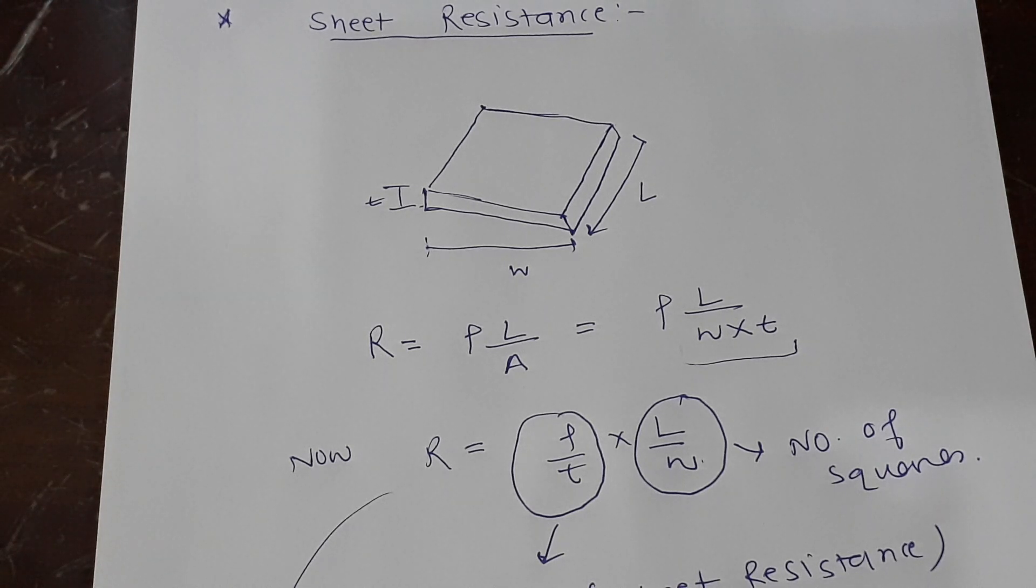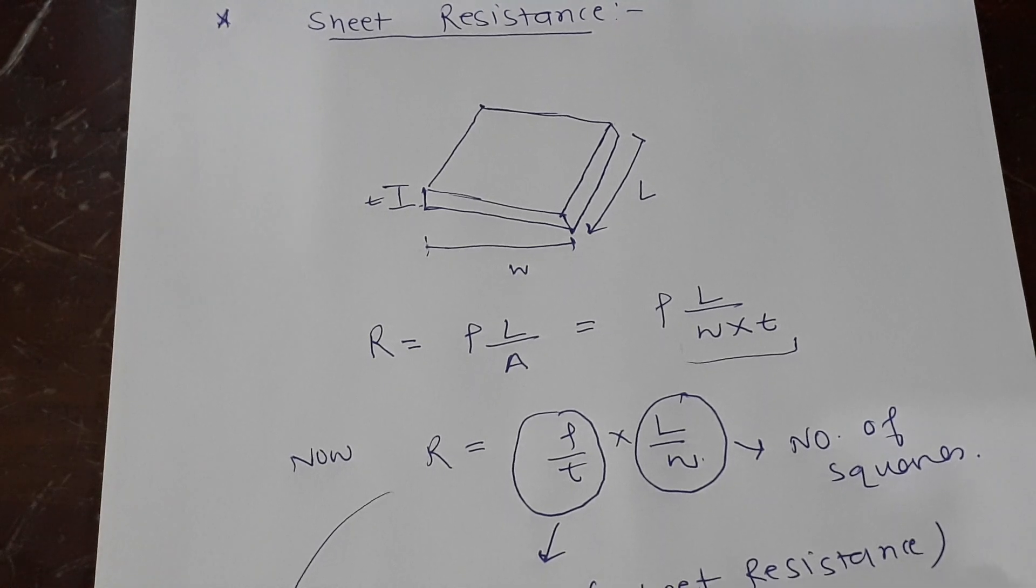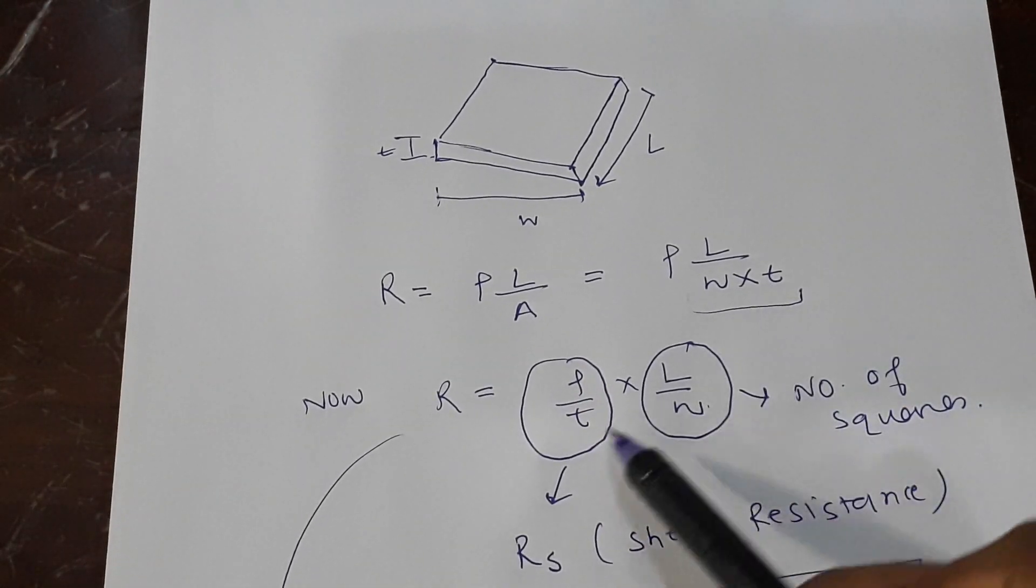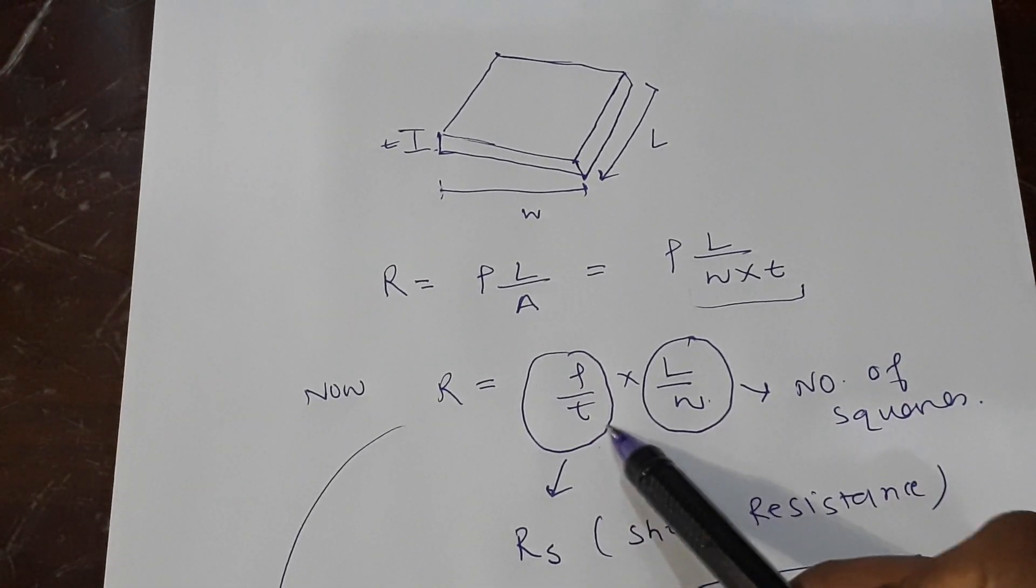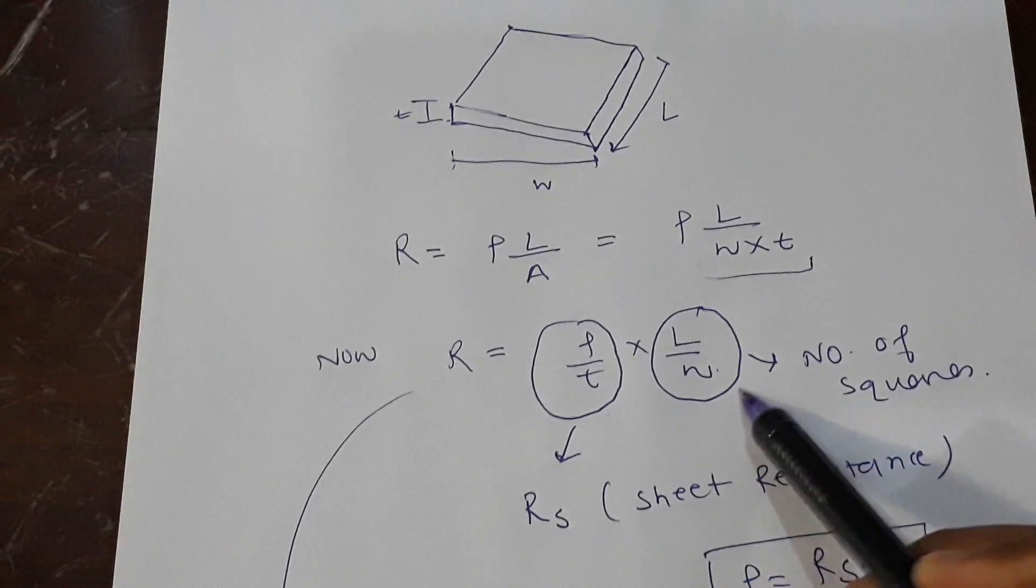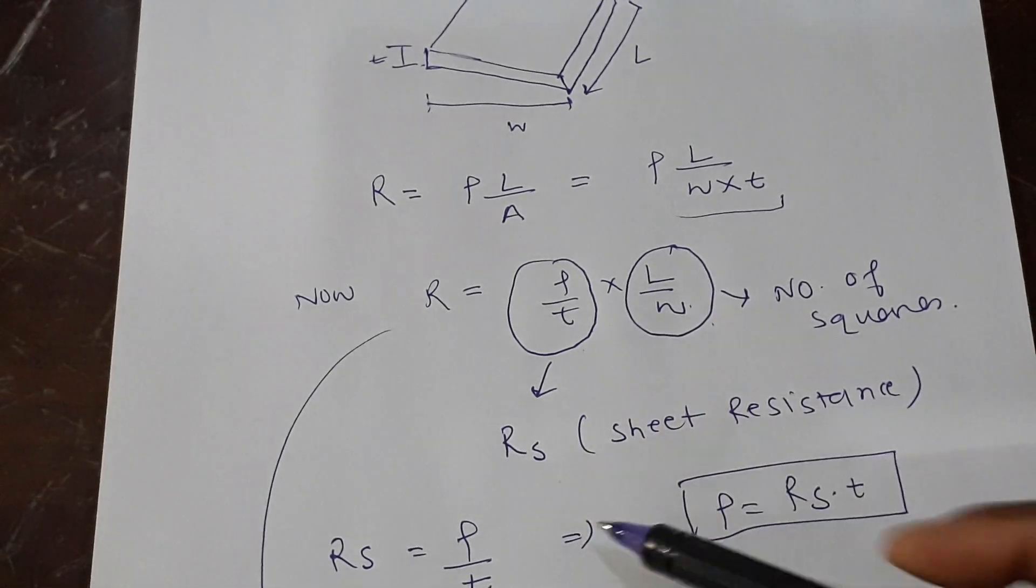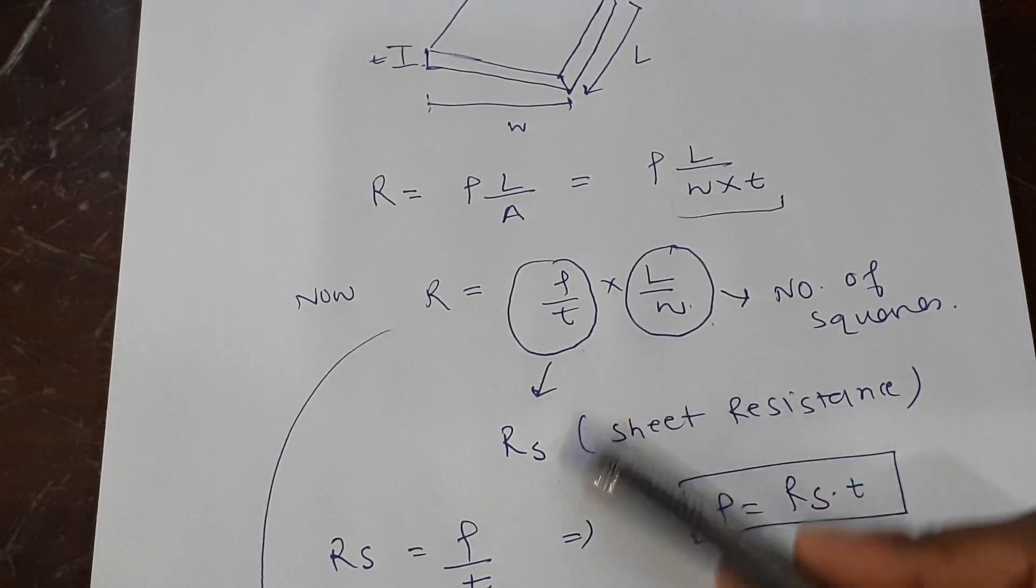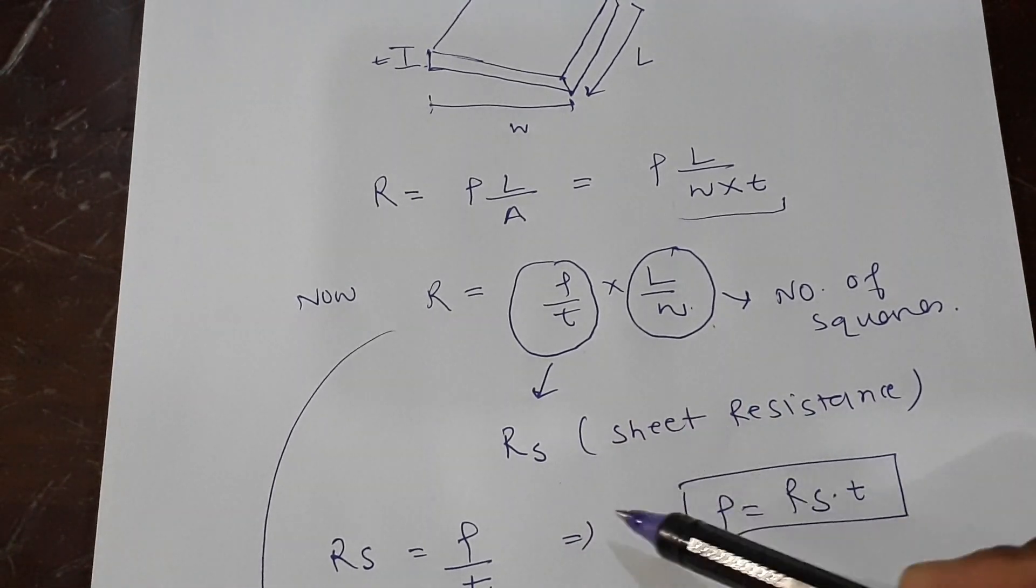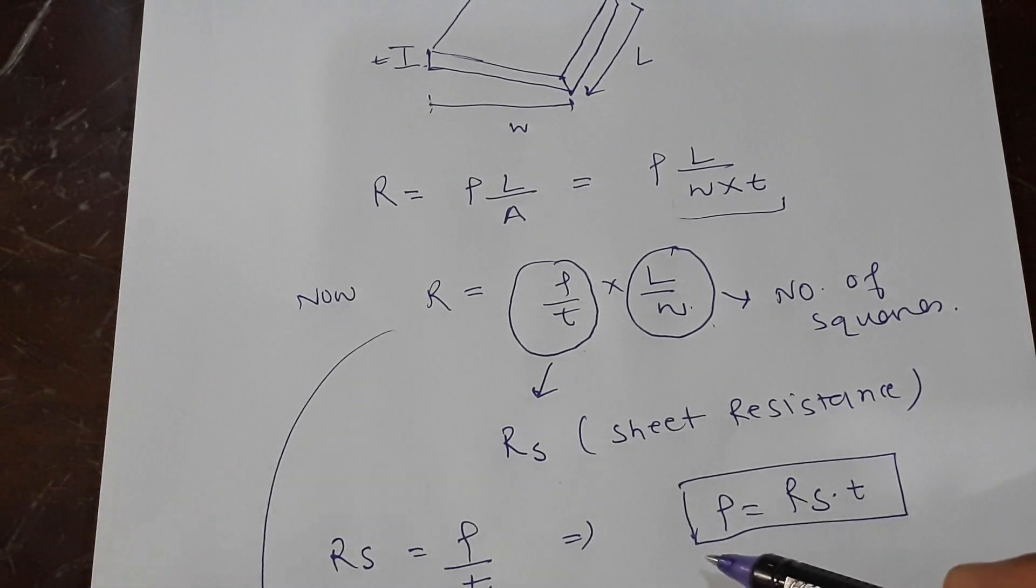So they come up with this number. They take t very smartly over ρ, so it becomes ρ/t and L/W. Now, these two quantities—ρ/t is called sheet resistance, and it's like ρ divided by some constant. I mean, t is a constant for a particular material, so once you know t, it is done. L/W is the number of squares.